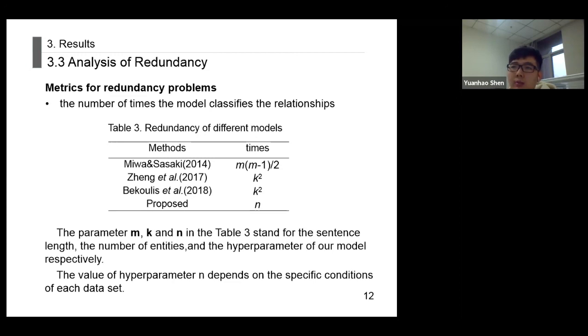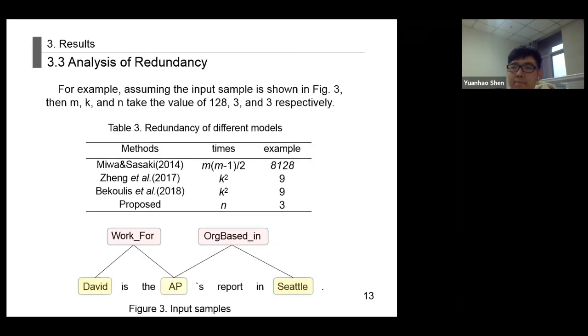The parameters m, k, and n stand for the sentence length, the number of entities, and the hyperparameters of our models respectively. The value of hyperparameter n depends on the specific conditions of each dataset. For example, assuming the input sample is shown in Figure 3, then m, k, and n take the value of 128, 3, and 3 respectively.